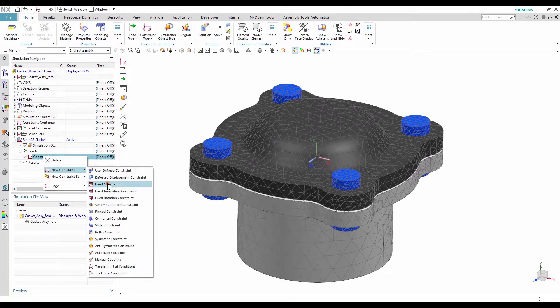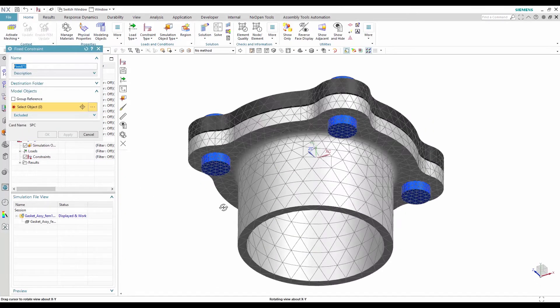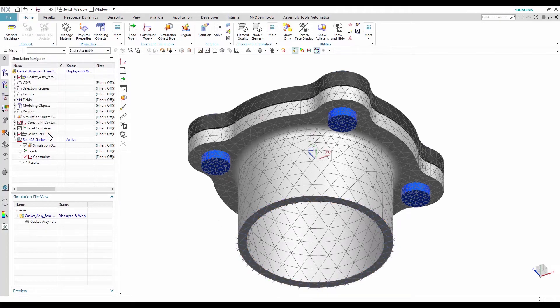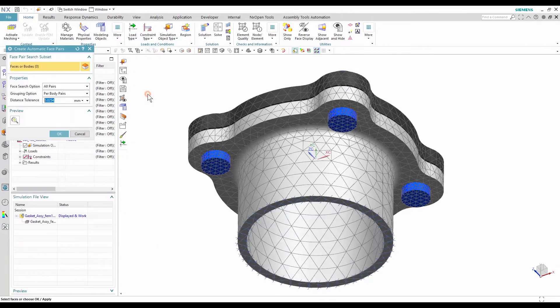In this newly created solution, I add a fixed constraint at the base of the tube. Then, I define automatic surface-to-surface contact between every component.